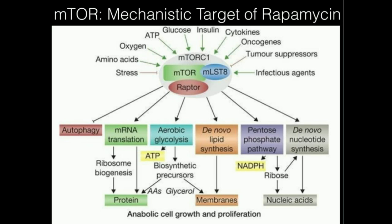mTOR also stimulates aerobic glycolysis. Anaerobic glycolysis only uses glycolysis, producing a measly two ATP per glucose. Aerobic glycolysis stimulates the Krebs cycle along with glycolysis and oxidative phosphorylation in the mitochondria, leading to about 34 to 36 ATP per glucose. We want a ton of ATP because protein synthesis consumes it, particularly through the enzyme aminoacyl-tRNA synthetase, which activates amino acids for protein synthesis.